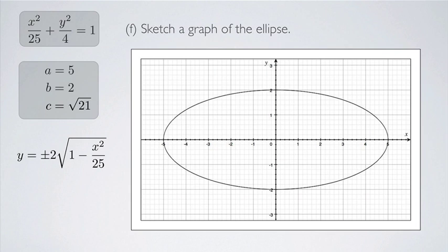Notice the major axis has a length of 10, running from −5 to 5 on the x-axis. The minor axis has a length of 4, going from −2 to +2 on the y-axis, confirming our earlier calculations.